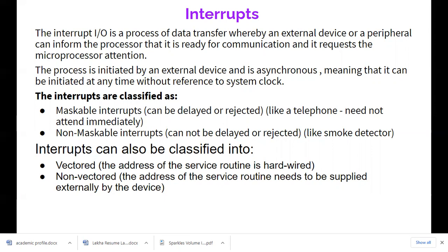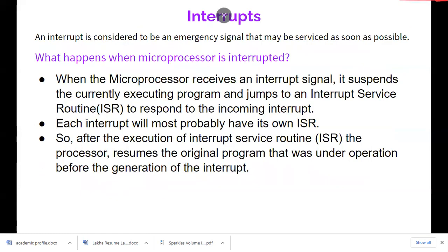Interrupts can also be classified into two types: vectored and non-vectored. In a vectored interrupt, what has to be done when a particular interrupt occurs is already hardwired inside the microprocessor memory. If a vector interrupt takes place, the microprocessor automatically goes to that particular memory location and executes the instructions coded there. Non-vectored interrupts allow the user to build their own interrupts — the address and service routines are left to the user to design.